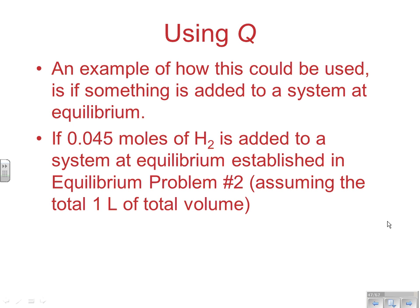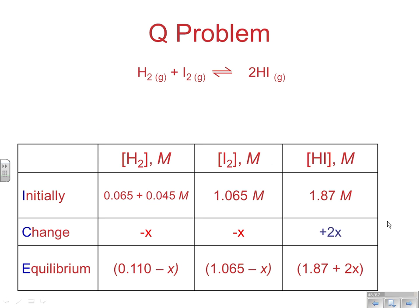Using Q. As an example of how this could be used, an example of how this could be used is if something is added to a system at equilibrium. So we have a system at equilibrium, and we're dumping something in. If we're dumping in reactants, obviously that's going to make our reactant concentrations too high. We're going to have to shift right, and so on. So if 0.045 moles of H2 is added to a system at equilibrium, and this is the system that we were just looking at a second ago in problem number two. We're at equilibrium, and we add 0.045 moles of H2. Now remember, assuming the total liters or the total volume was one liter.